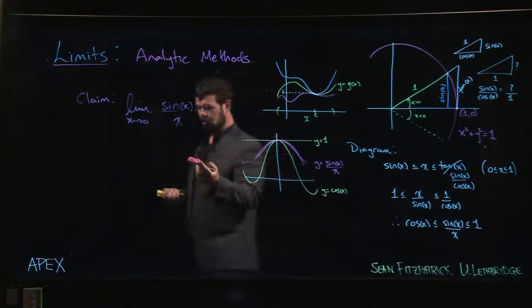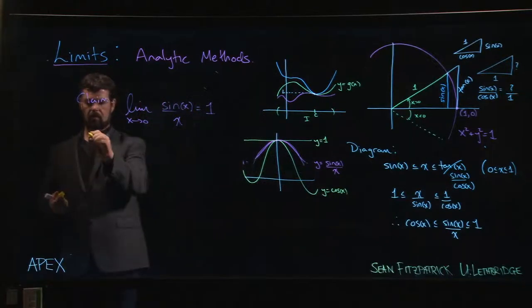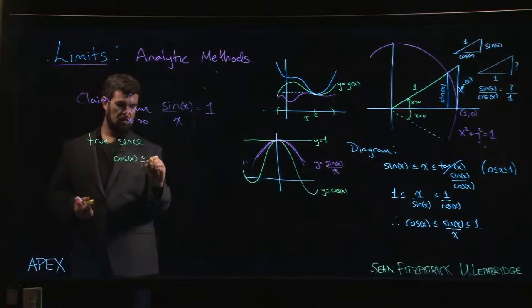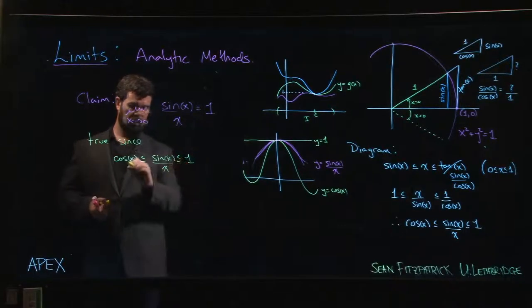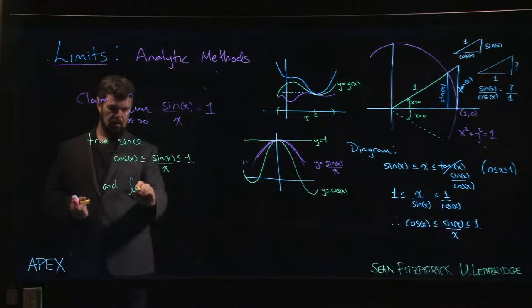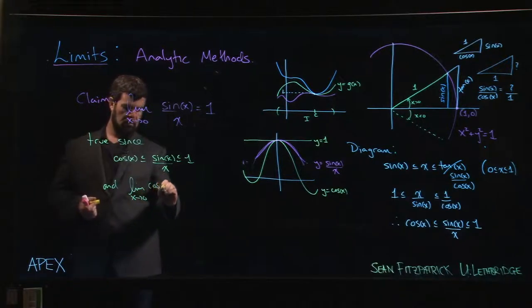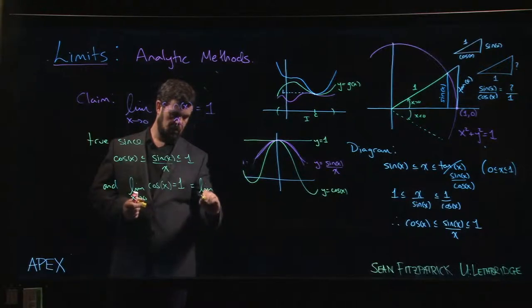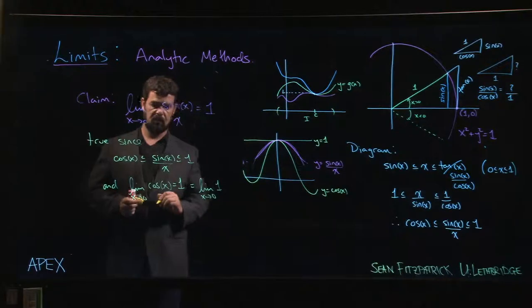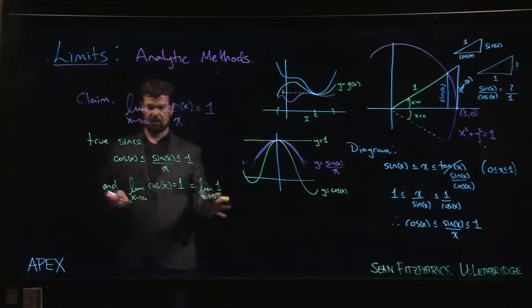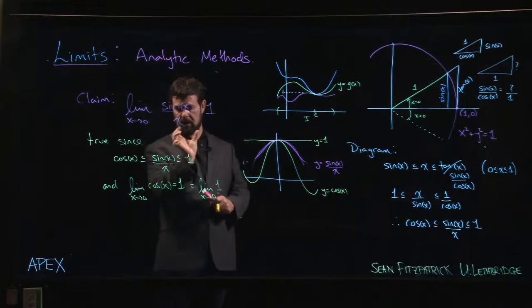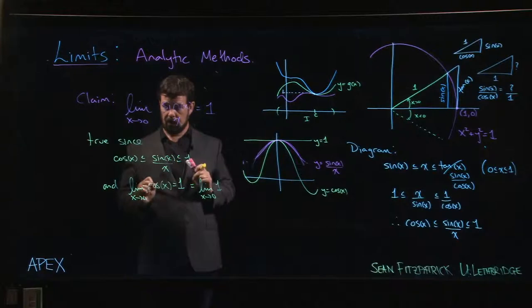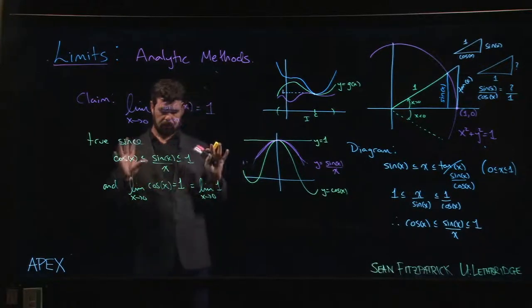Why is this true? This is true since sin(x) over x is always sandwiched between cos(x) and 1, and we know the limit as x goes to 0 of cos(x)—we saw this in a previous video—is 1, and of course 1 is also the limit of the constant function 1. This is direct application of the squeeze theorem: f(x) is cos(x), g(x) is sin(x) over x, h(x) is 1. The function we want is squeezed between those two; the ones on the outside both have limit 1, so the one in the middle has to have limit 1 as well.